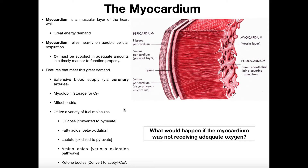The interesting thing about the myocardium — the cardiomyocytes — is they're able to use a variety of fuel molecules, something we don't generally see in most cell types. The myocardium can utilize glucose, which runs through glycolysis and is converted to pyruvate, then through oxidation to acetyl-CoA. The myocardium can also utilize fatty acids through beta-oxidation, which also produces acetyl-CoA. Also, lactate produced by the rest of the body — for example, during high-intensity exercise — skeletal muscles are generating a lot of lactate.